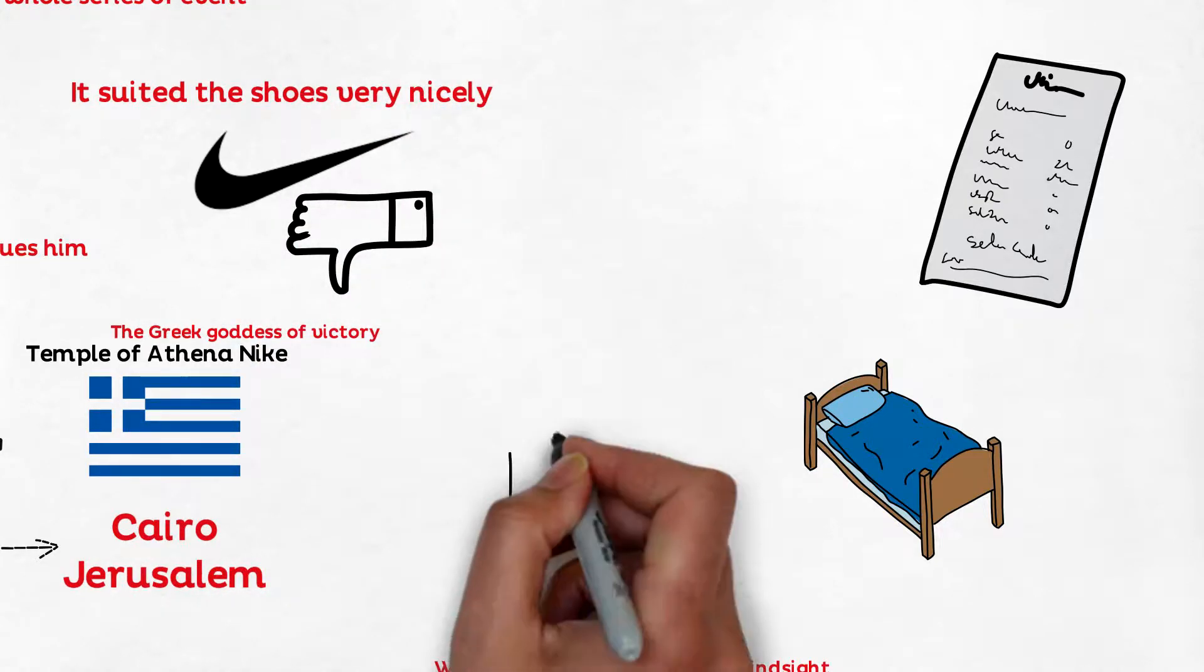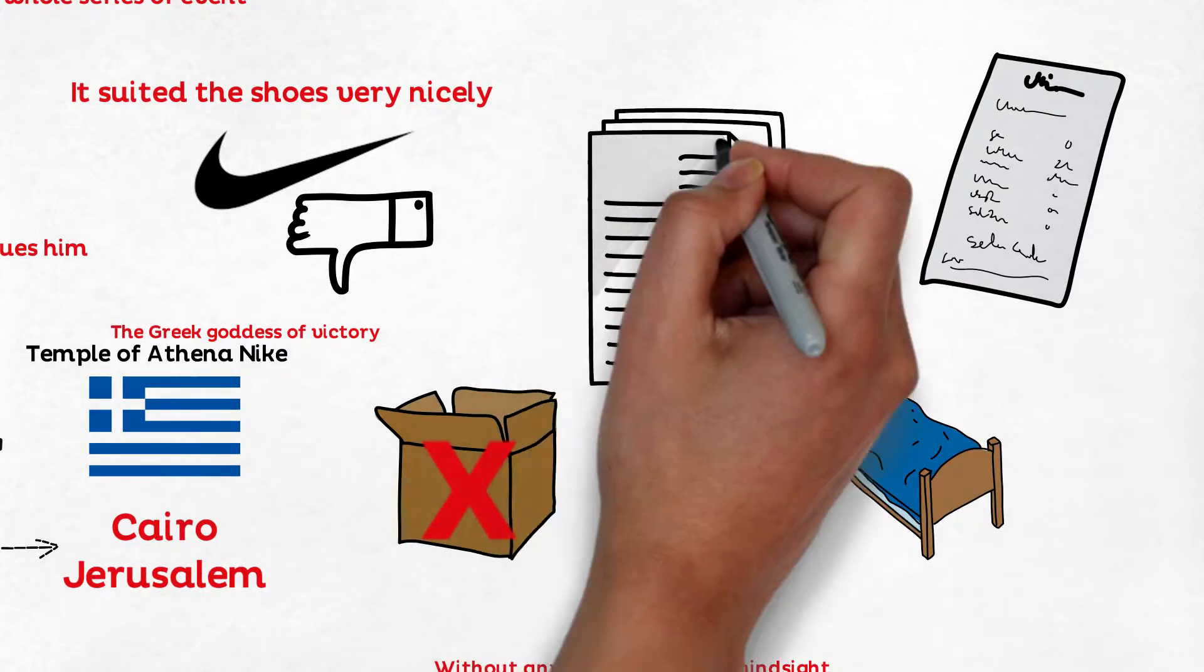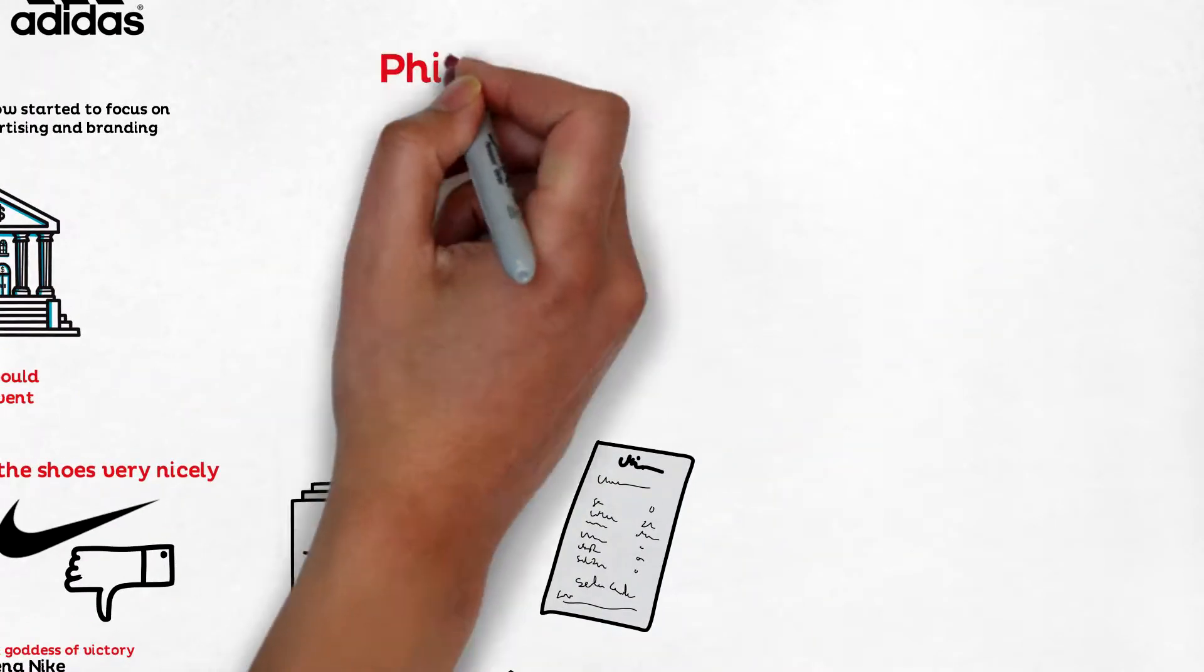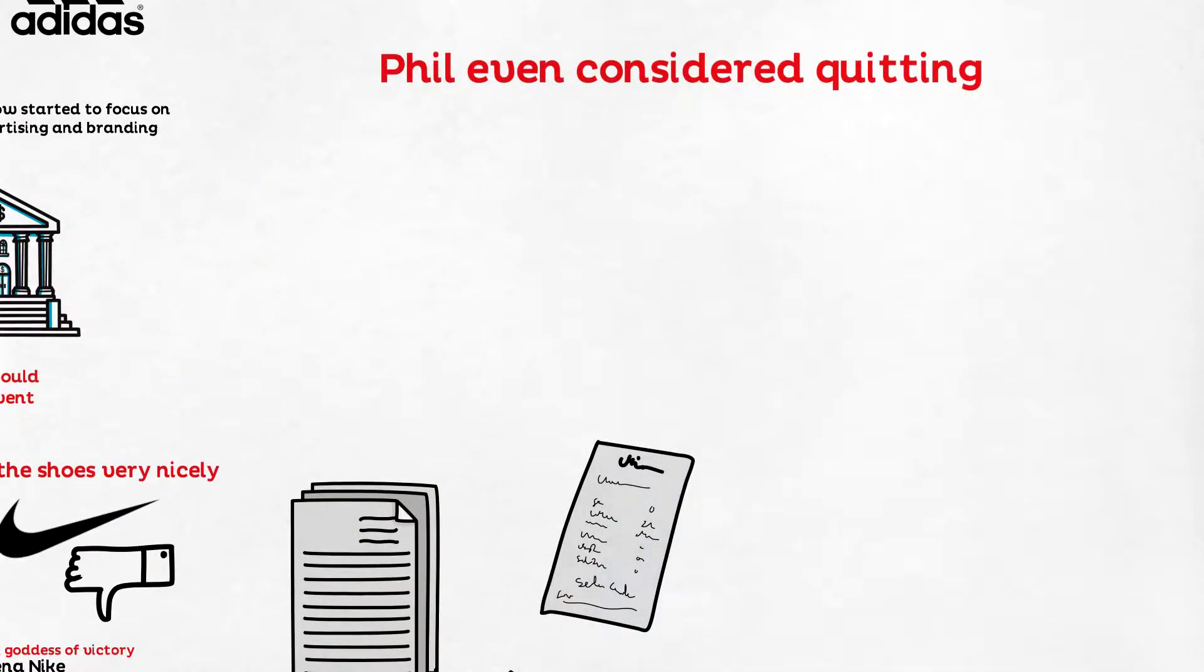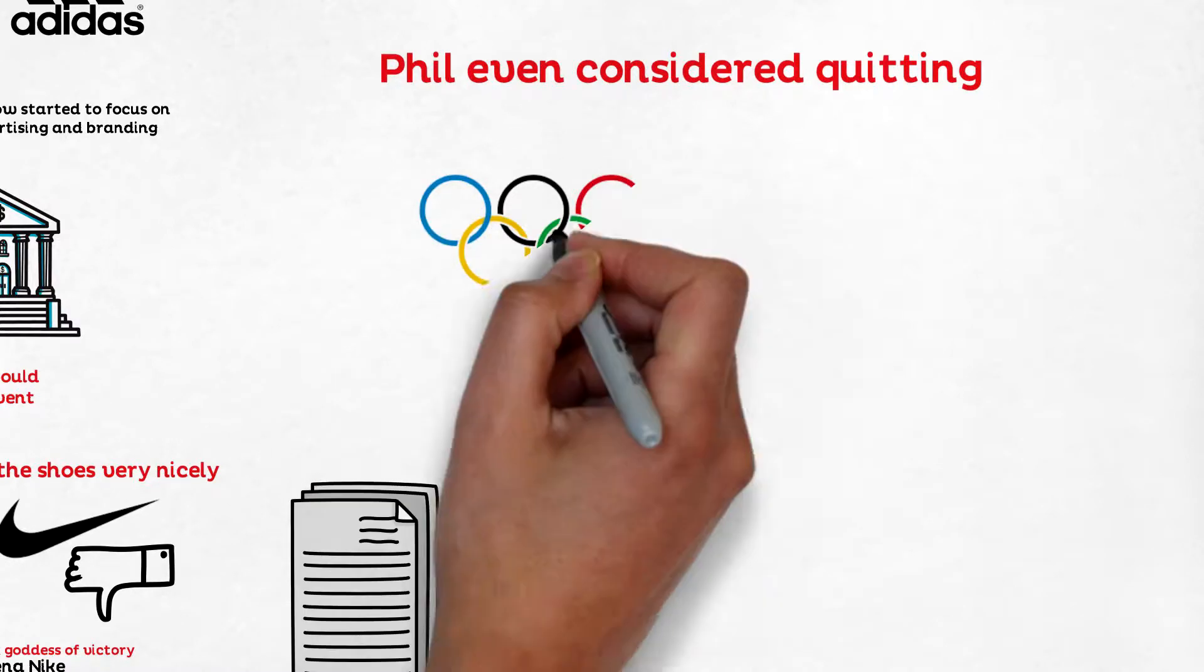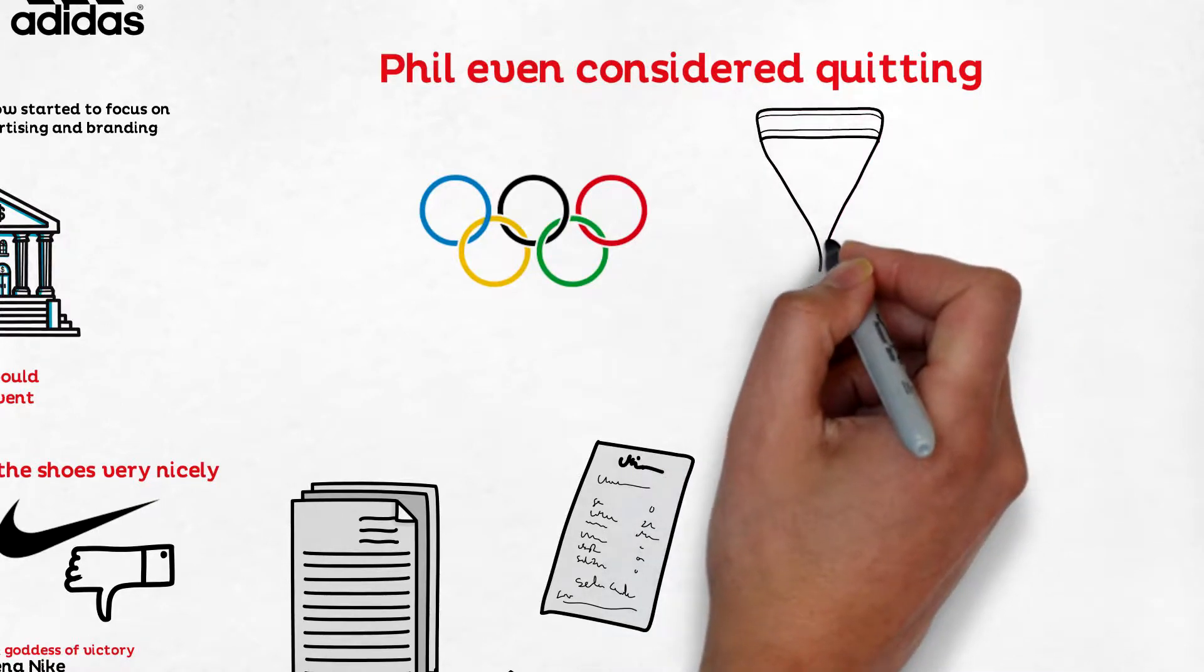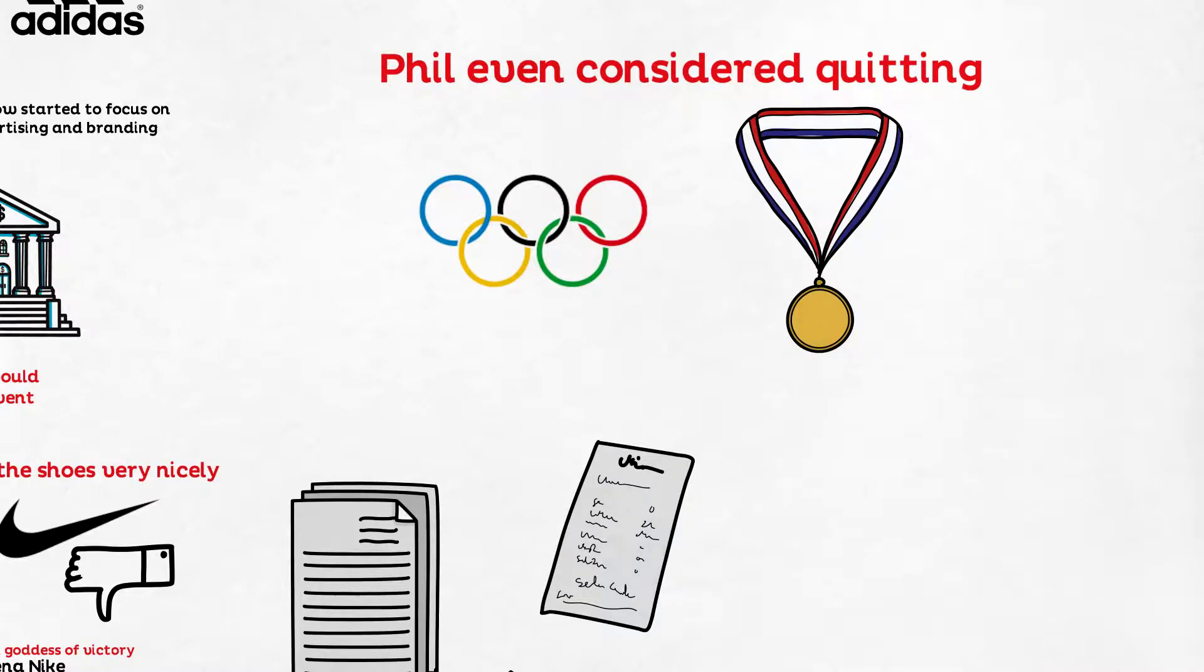During this time, Phil's company went through majority of issues such as bad suppliers, the lawsuit, paying NISO the monthly interest. Phil even considered quitting, but then he listened to his inner voice which told him to keep going. Final turnaround came during the 1972 Olympics where one of the athletes wore Nike and won. Now this became a national news and everybody wanted Nikes.